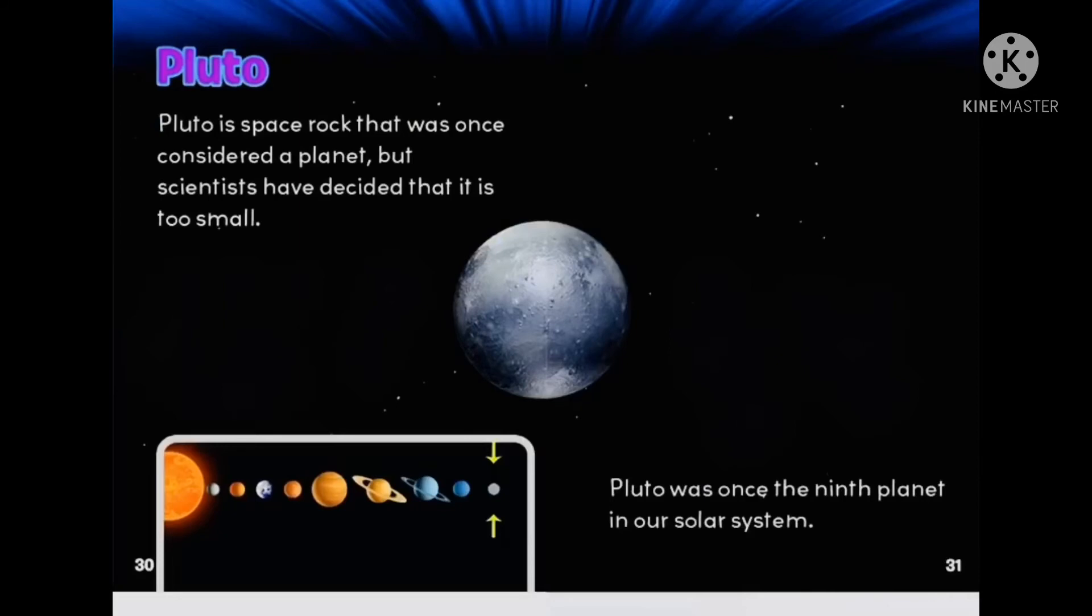Pluto. Pluto is a space rock that was once considered a planet, but scientists have decided that it is too small. Pluto was once the ninth planet in our solar system.